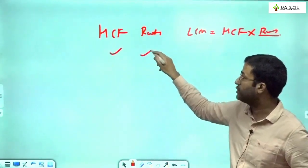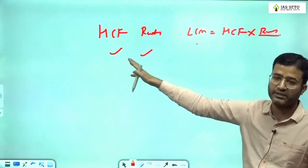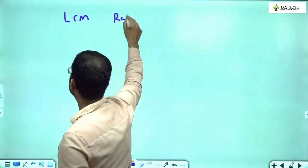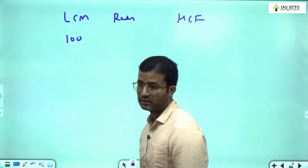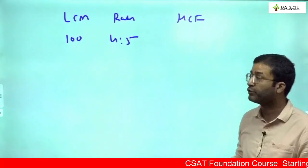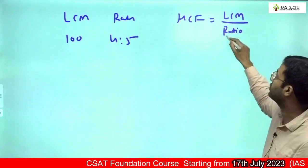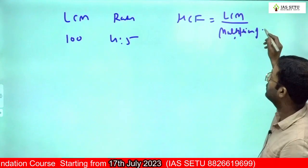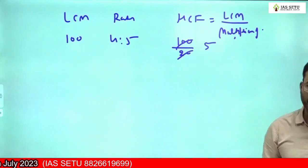Are you getting the point? HCF given, ratio given, we can find LCM. If LCM and ratio given, can we find HCF? Yes. I give you the question: LCM of two numbers is given as 100, ratio is given 4:5. Then they ask what is HCF. You write HCF will be LCM divided by multiplication of ratio. So can you say this will be 100 ÷ 20, HCF will be 5.